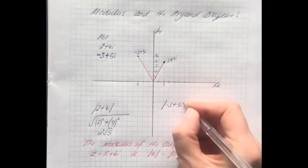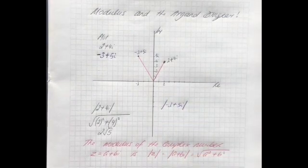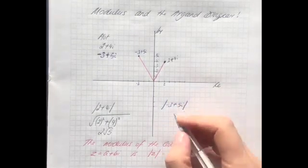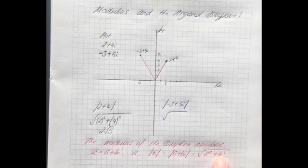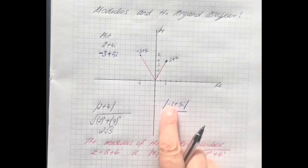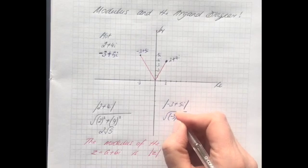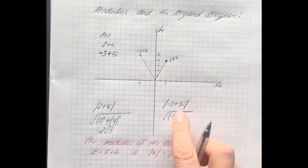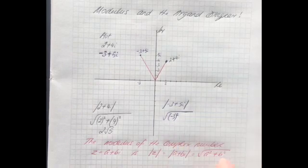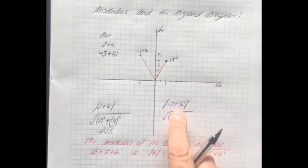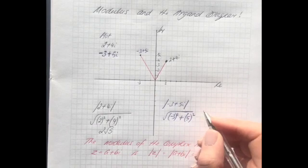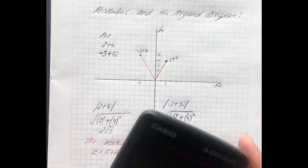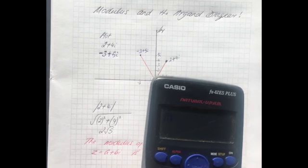The modulus of minus 3 plus 5i, well again, it is going to be the square root of a squared plus b squared. So square root, your a this time is minus 3, put it in brackets and square it. And your b is the coefficient of i - don't forget your plus in between - your b is the coefficient of i, so it's 5, put it in brackets and square it.